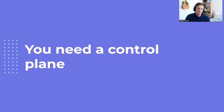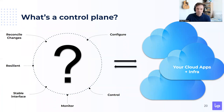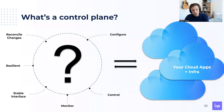What you need is a control plane. A control plane-based architecture gives you a declarative approach to defining and managing resources, continuous reconciliation of resources to eliminate configuration drift, and a pattern for achieving self-service. A control plane needs to be able to configure, control, and monitor — it needs to be resilient, reconcile changes, and have a stable interface. That control plane will control your cloud's apps and infrastructure.